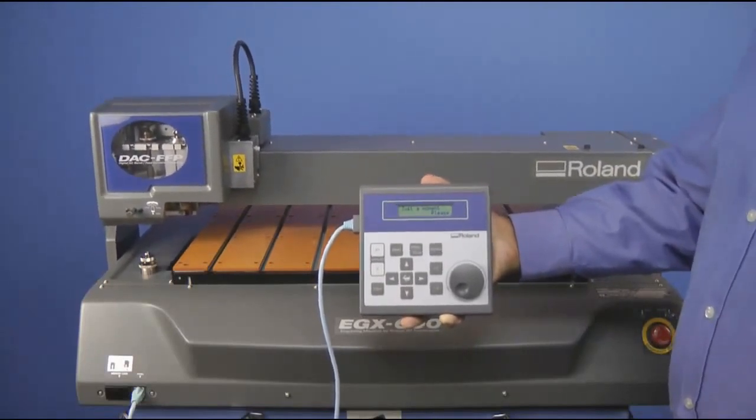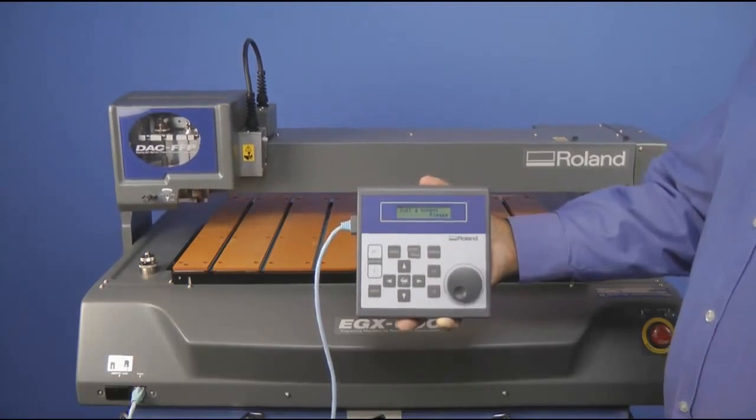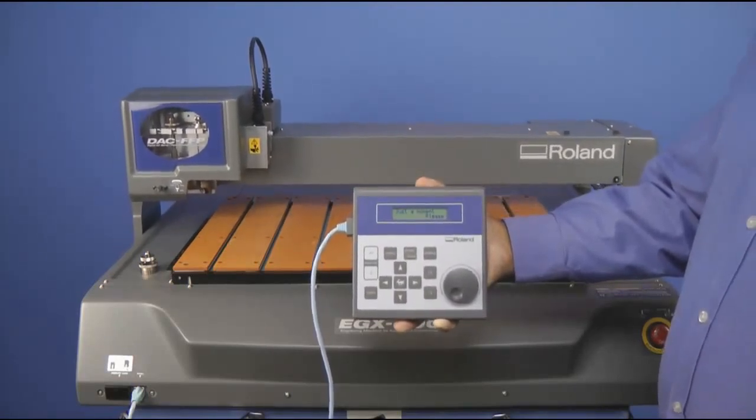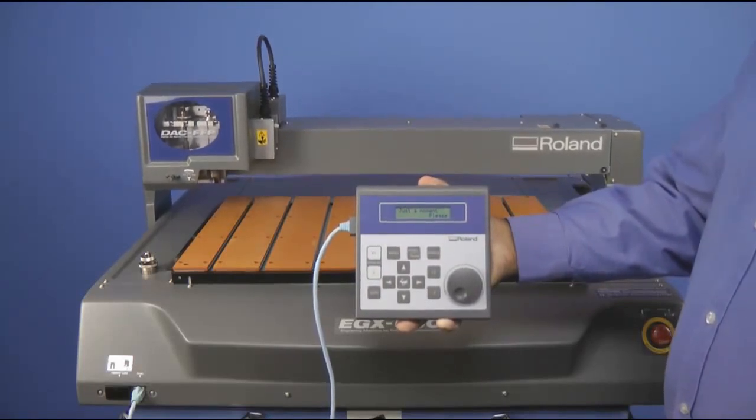Once the engraver is initialized, the display will be at the default menu which shows your X, Y, Z position, and spindle speed.